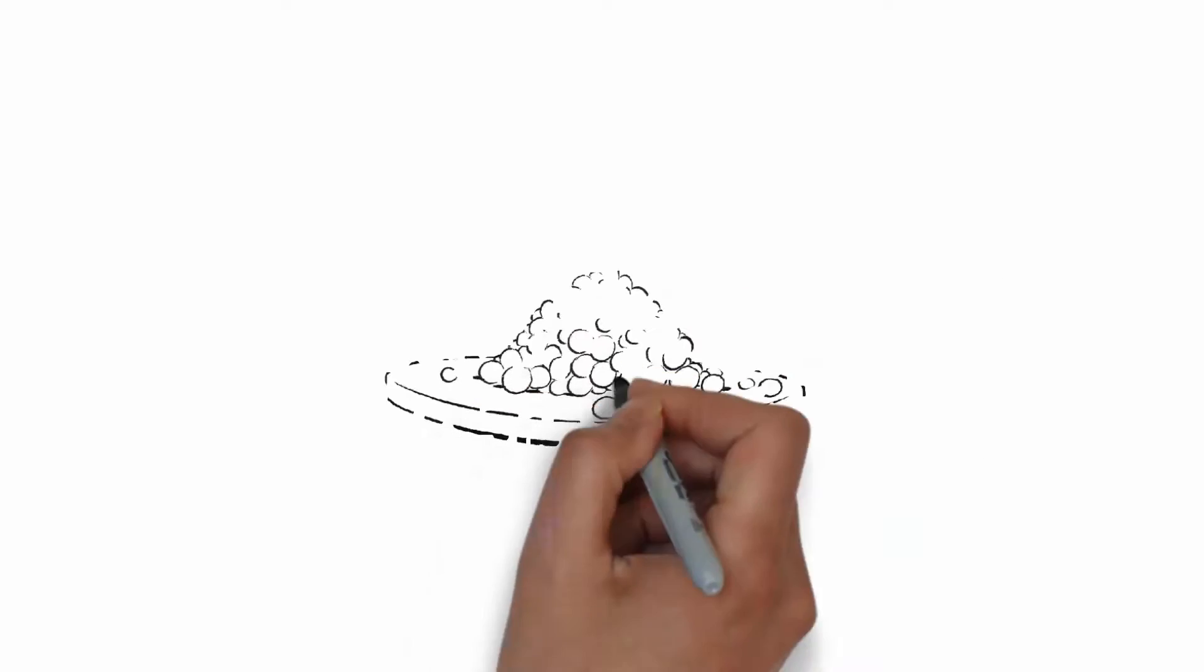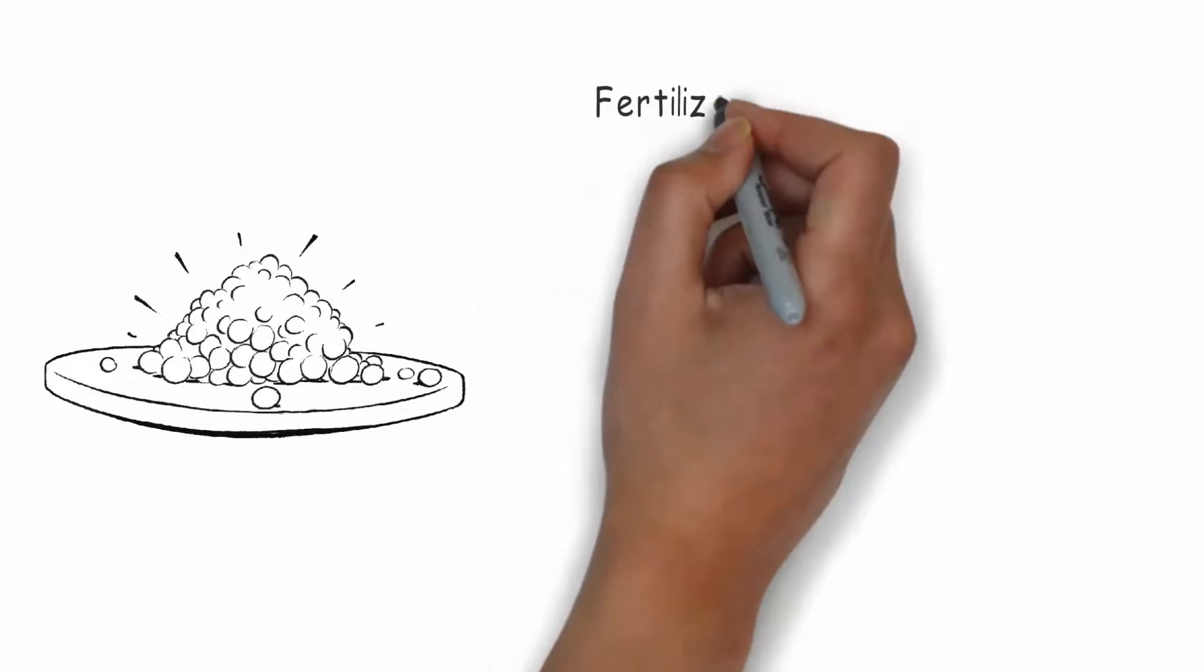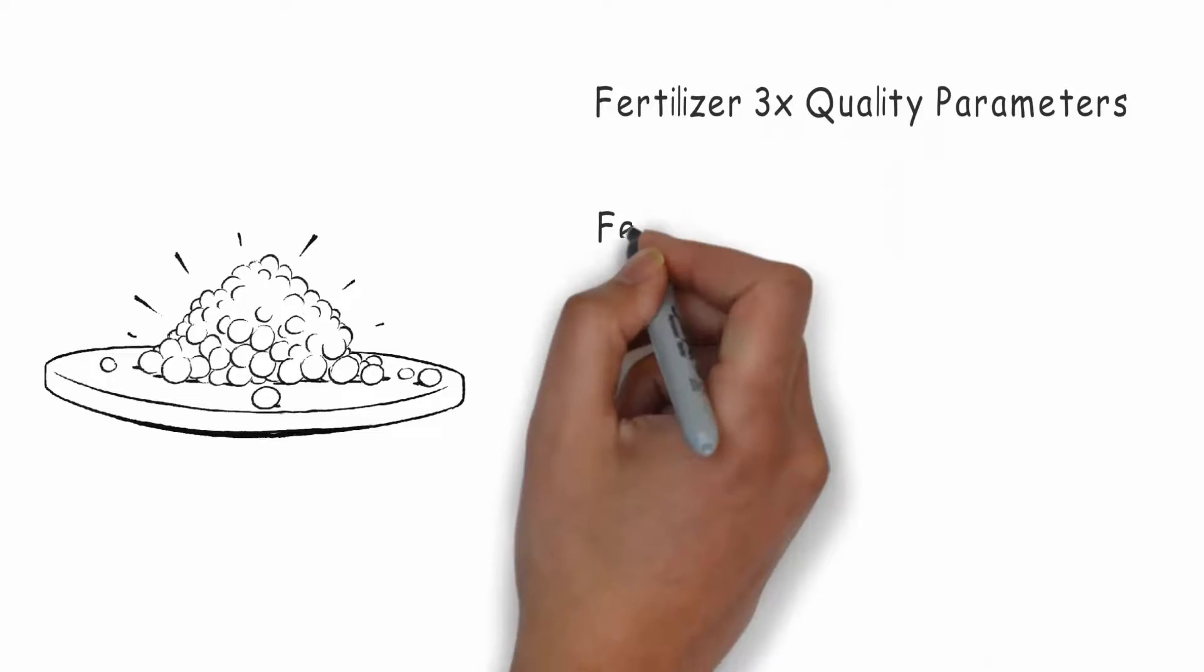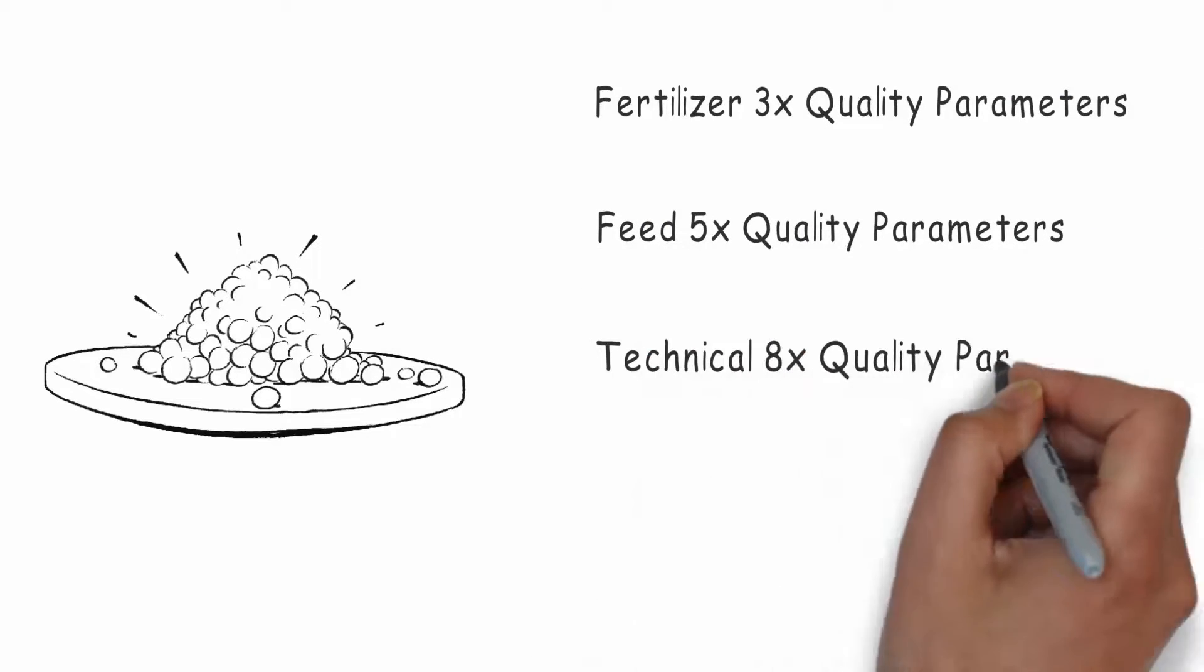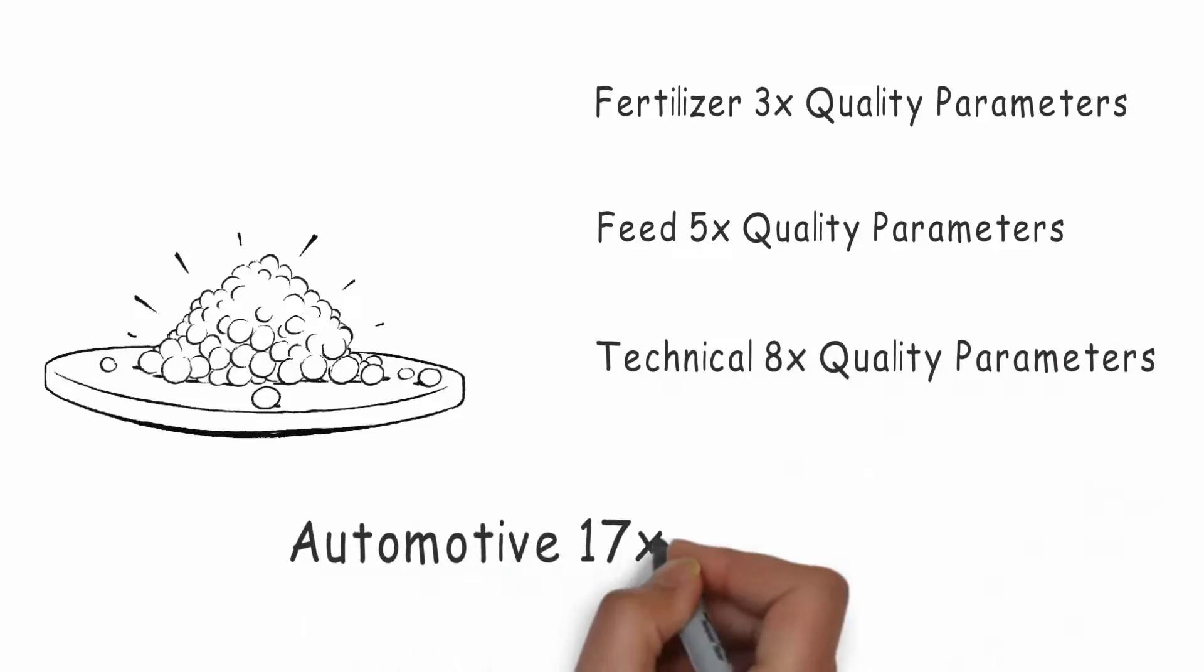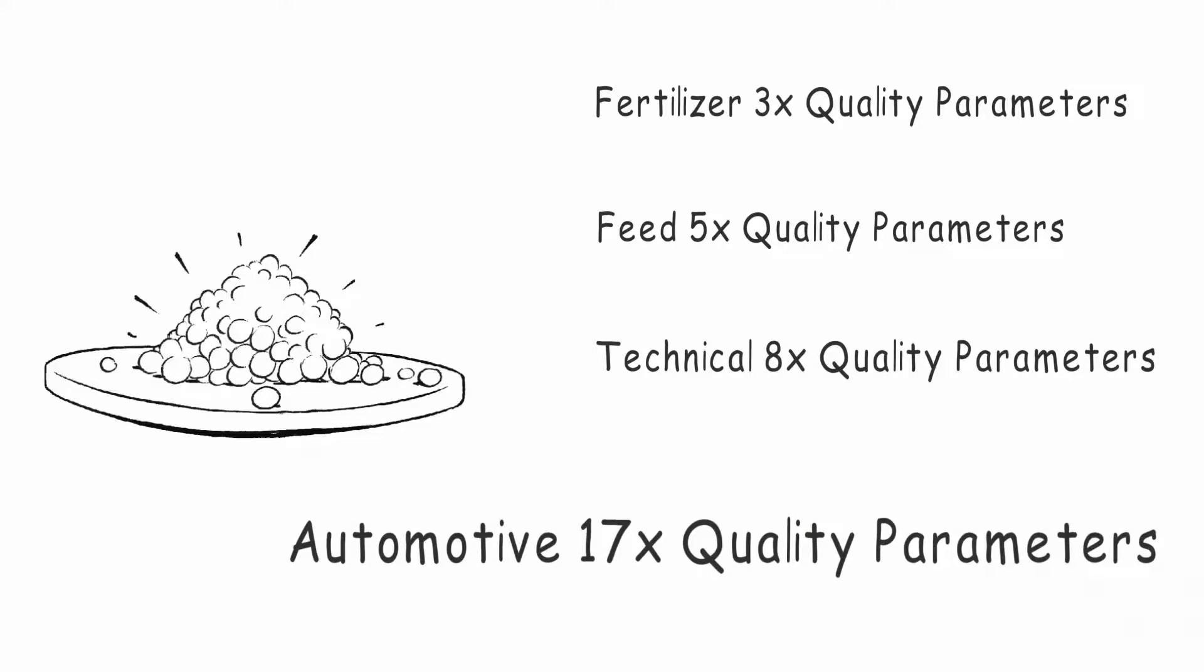Be aware there are different types of urea: fertilizer, 3x quality parameters; feed, 5x quality parameters; technical, 8x quality parameters; and automotive urea, 17x quality parameters. Only the last type of urea is pure enough to produce AdBlue.